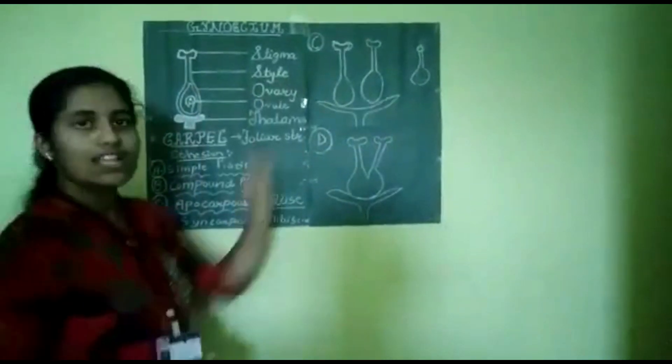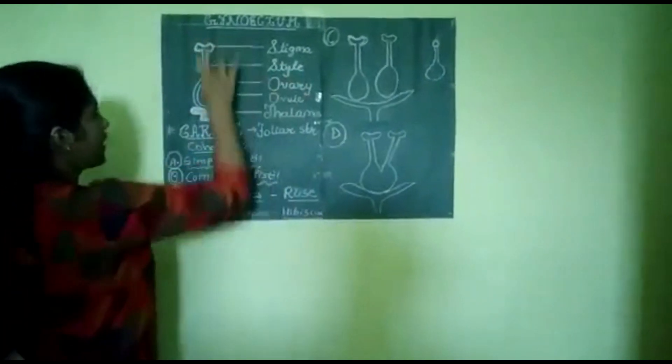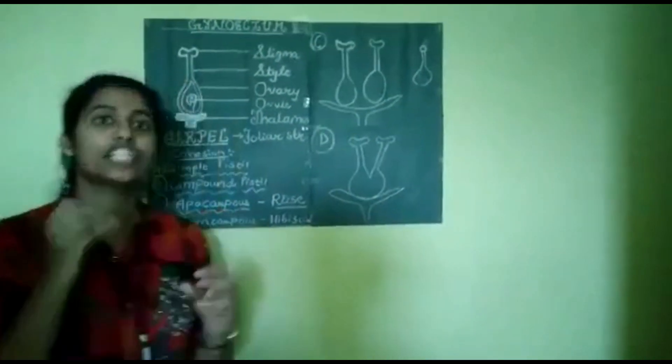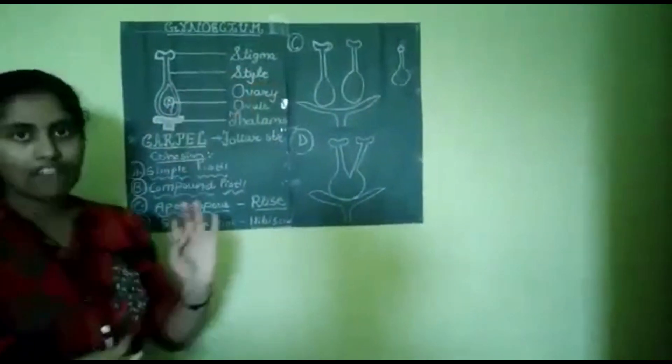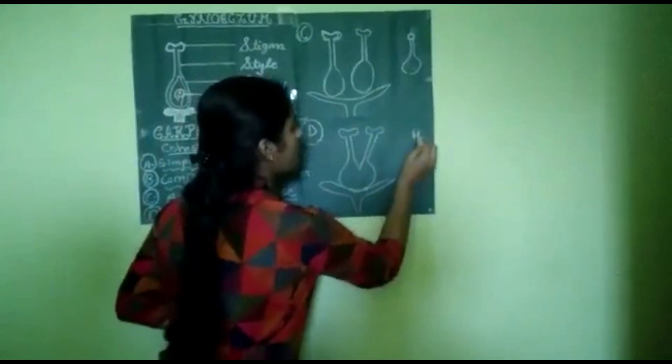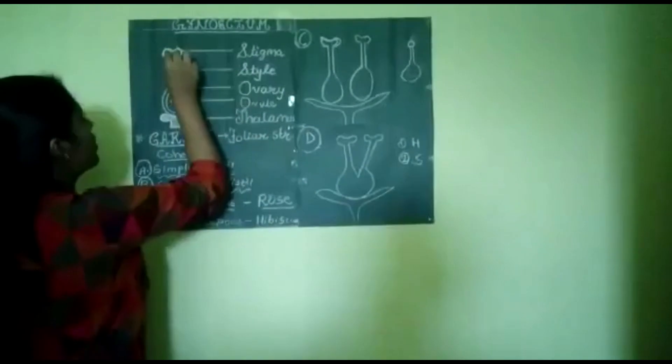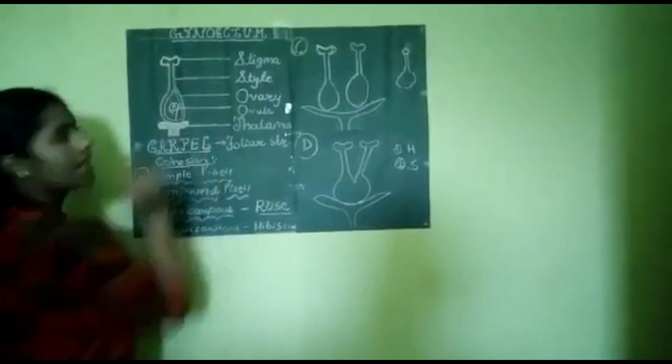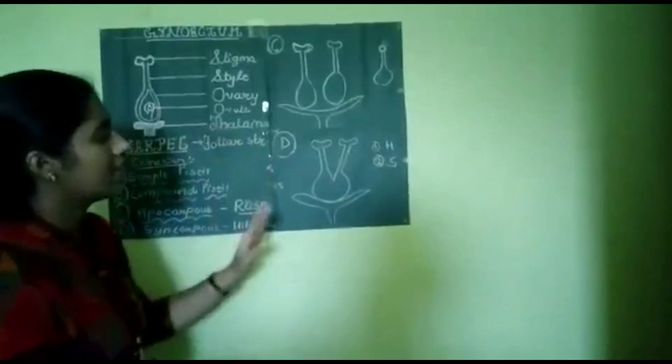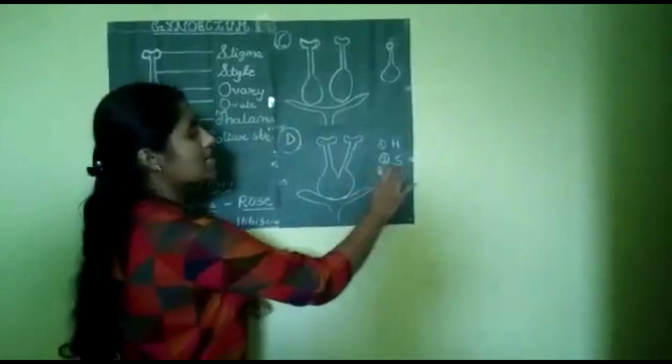Second portion is the style. Style is the elongated middle narrow portion of the flower which can be divided on the basis whether they are having transmitting tissue present inside the tube or not. If they are having transmitting tissue inside it, then they are classified as two types: hollow and solid. Hollow, in the hollow sense, it bears epidermal cells in its lining but it does not contain any transmitting tissue. If it contains transmitting tissue inside the elongated middle narrow portion, then it is called as solid style.